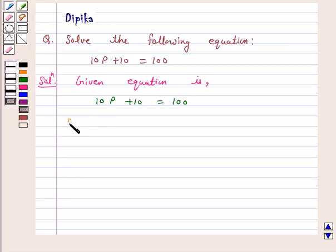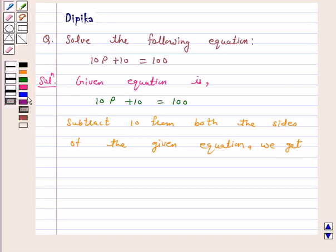Subtract 10 from both the sides of the above equation. We get 10p plus 10 minus 10 is equal to 100 minus 10, or 10p is equal to 90.